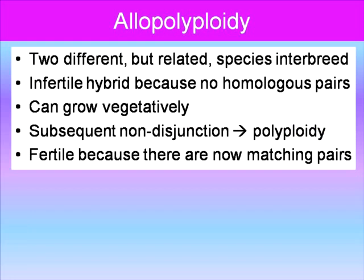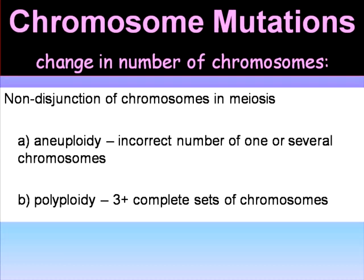In allo-polyploidy, two different but related species interbreed, producing an infertile hybrid because there are no homologous pairs. However, they can grow vegetatively — for example, if you cut a leaf and place it in the right nutrient environment, it can grow an entirely new plant, so they can reproduce asexually. Subsequent non-disjunction results in polyploidy, and then the organism is fertile because it now has matching pairs of chromosomes. In summary, changes in chromosome numbers due to non-disjunction include aneuploidy — an incorrect number of one or several chromosomes — and polyploidy, which is three or more complete sets of chromosomes.